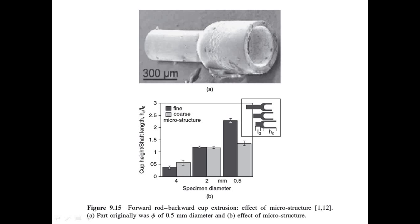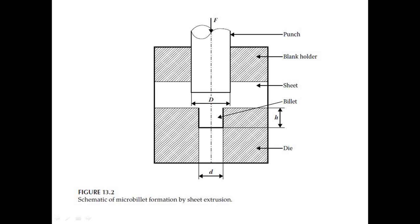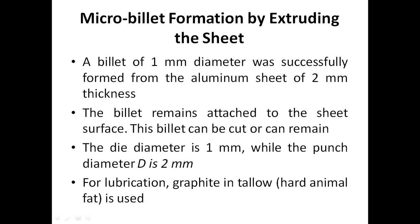The figure shows forward rod and backward cup extrusion and its effect on microstructure. An SEM image of a forward extruded micro-gear shaft with a gear module of 50 micrometers and 10 number of teeth is shown. A schematic illustration of micro-billet formation by sheet extrusion is also presented, where a billet of 1 mm diameter was successfully formed from an aluminum sheet of 2 mm thickness.